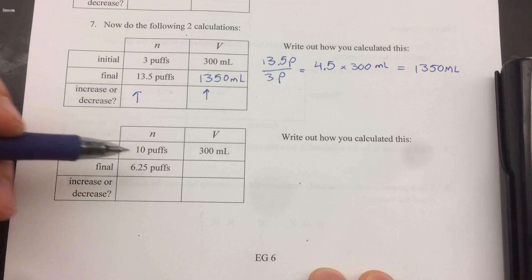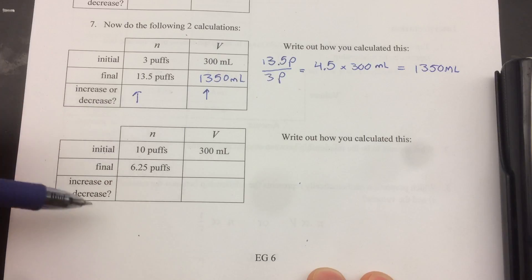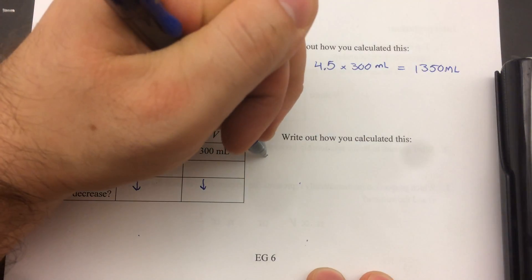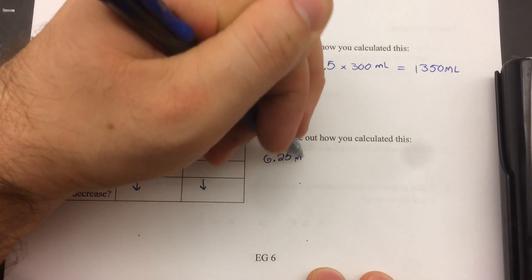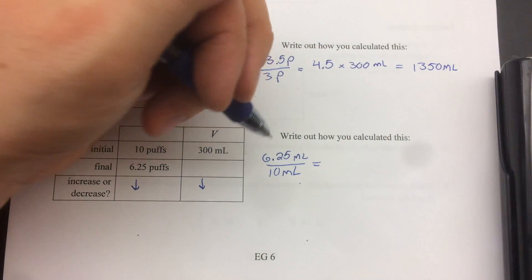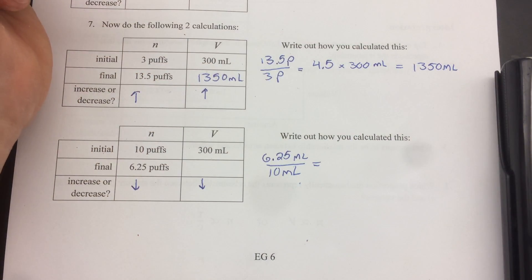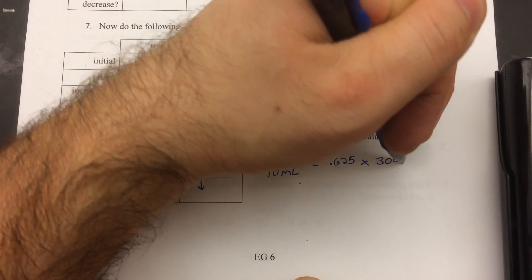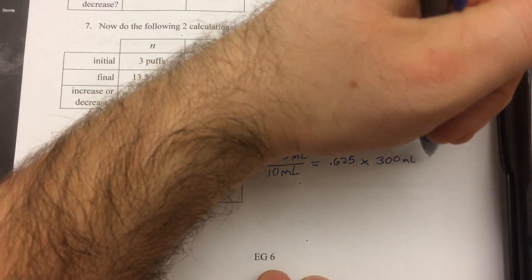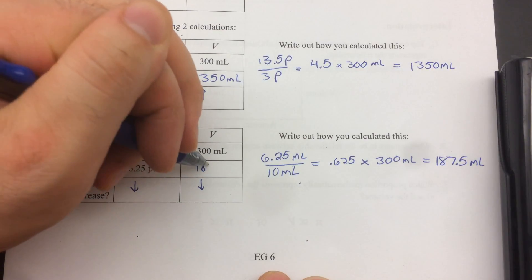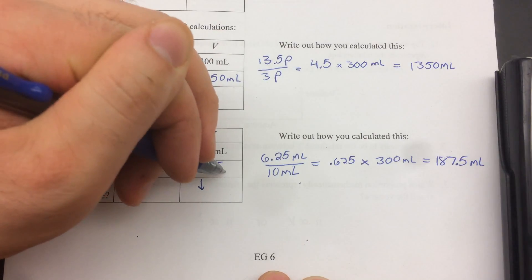This time it's going down. So it's starting at 10 and it's finishing at 6.25. So we need to know what factor it goes down by. So we're going to divide it in the same order. 6.25 over 10. So this is going to go down. So we're going to predict the volume to go down. So 6.25 over 10 equals this is going to be a decimal. It's a smaller number over a bigger number. 0.625 times the volume, 187.5. We predicted it would go down and it did. It went from 300 to 187.5 milliliters.